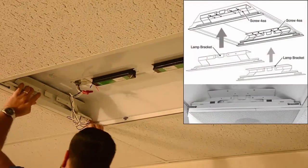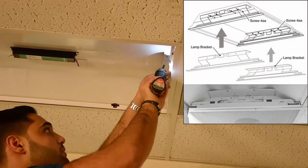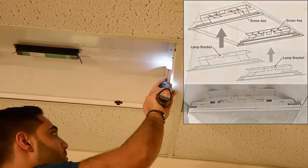Attach the lamp brackets on both sides of the troffer between the existing fixture housing and T-Grid with screws provided.